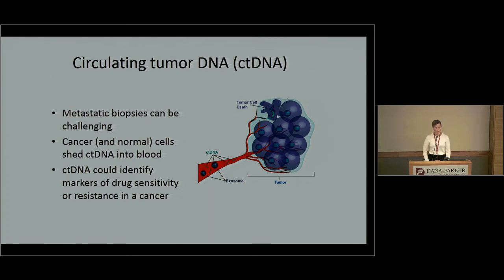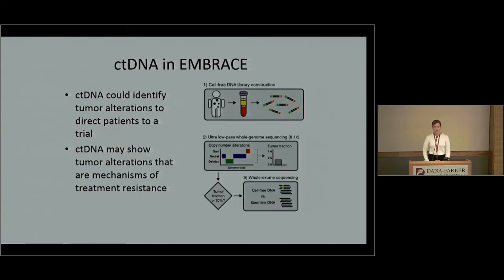Circulating tumor DNA is another area of interest where we take a blood biopsy rather than a tissue biopsy. Blood biopsy is much easier on patients; metastatic biopsies are challenging and can certainly be painful. We know that cancer cells shed their DNA into the blood, and we can isolate that DNA and identify gene alterations to better understand ways the cancer might be becoming resistant. We are doing this right now in the EMBRACE study that Nancy Lynn runs.